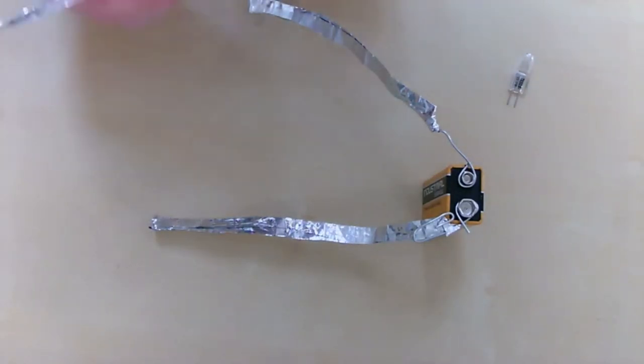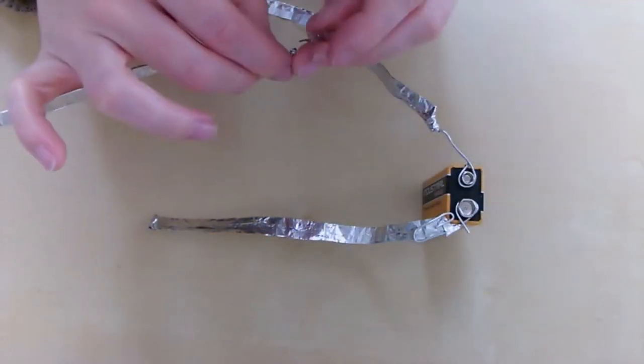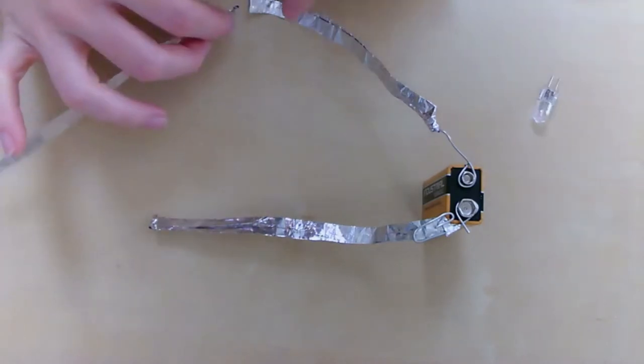We also need another wire. So this is where our light bulb will attach. So make another little light bulb holder, and then we can attach our switch.